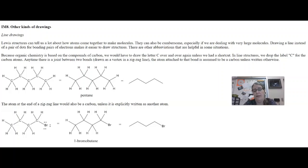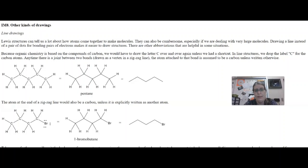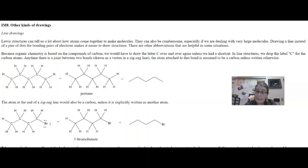So instead of showing all three H's at the end of the pentane chain, they just show the end of the chain. You would look at that first carbon and say, there's one bond shown, so I know there must be three hydrogens on there as well. The atom at the end of the zigzag line is always assumed to be a carbon unless it is explicitly written out as another atom, like a bromine in this case. And in the simplified structure, a lot of times they leave out lone pairs like the three lone pairs on the bromine.